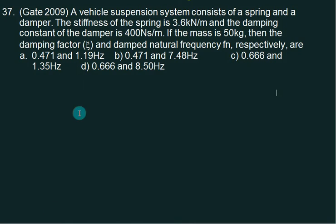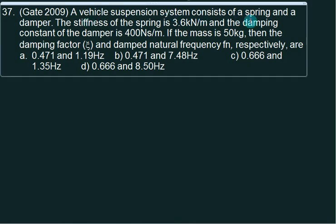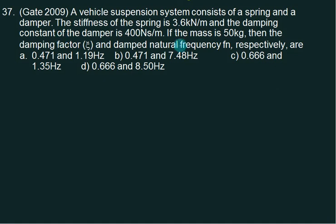In this question he has asked: a vehicle suspension system consists of a spring and a damper. The stiffness of the spring is 3.6 kN/m, so k equals 3600 Newton per meter. The damping constant is 400, so c equals 400 Newton second per meter. Mass is 50 kg. He wants to know the damping factor and damped frequency of vibration.